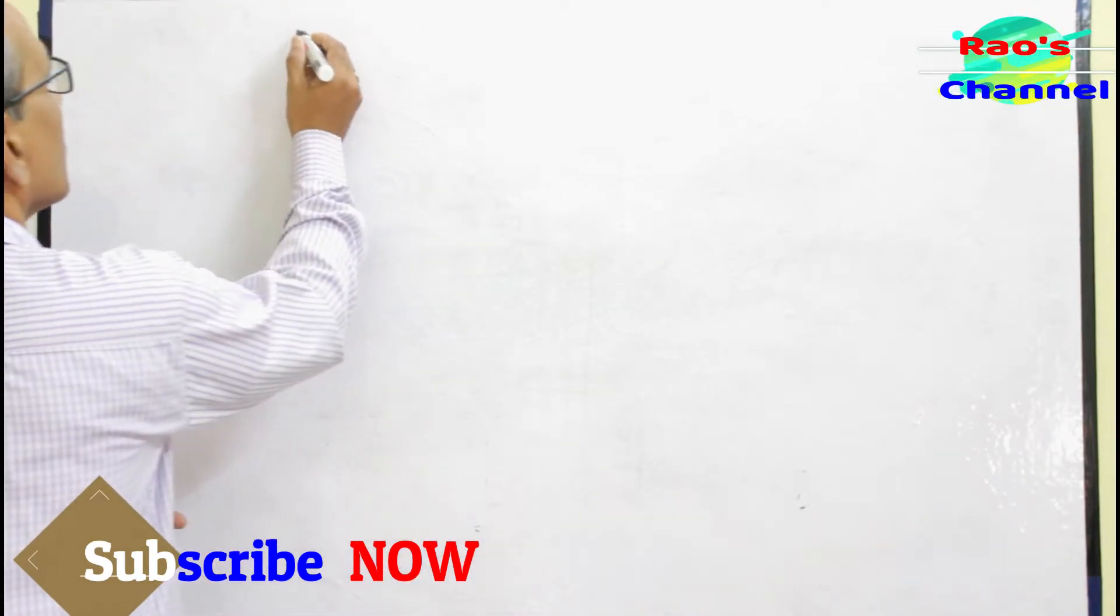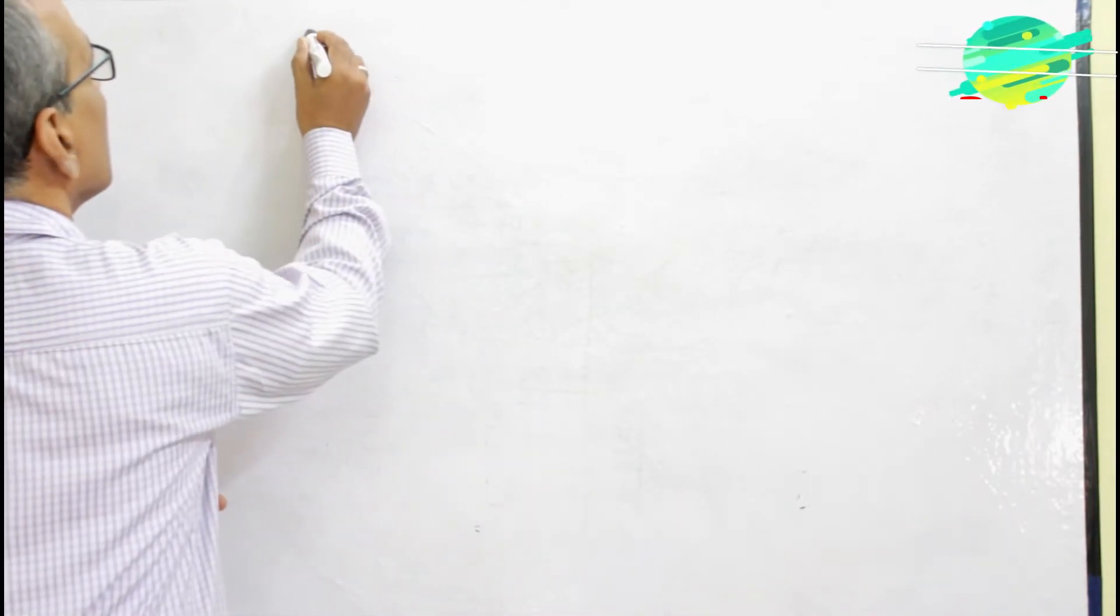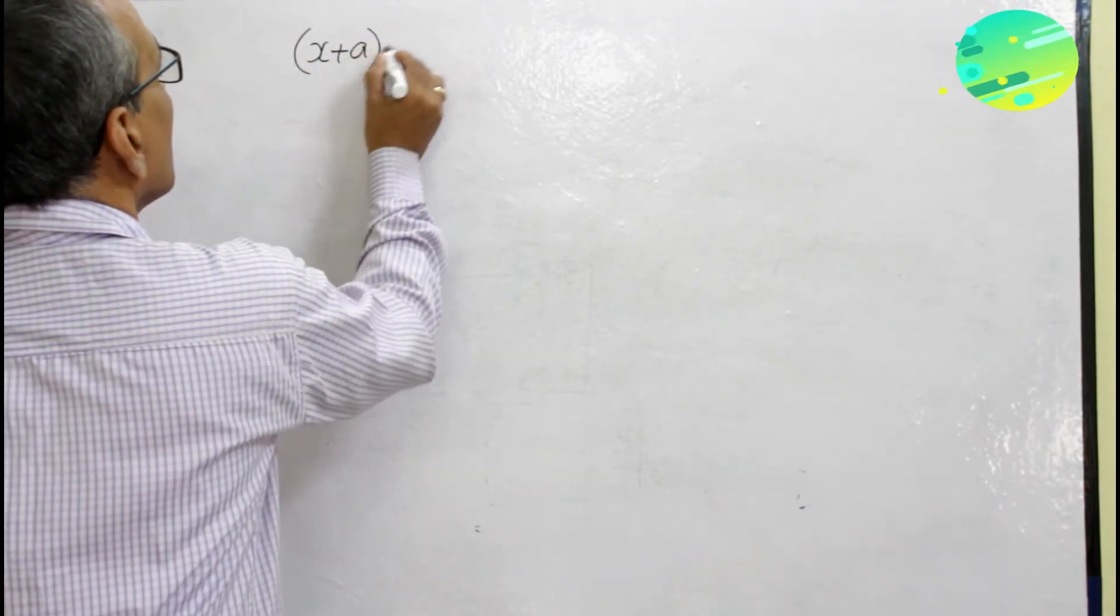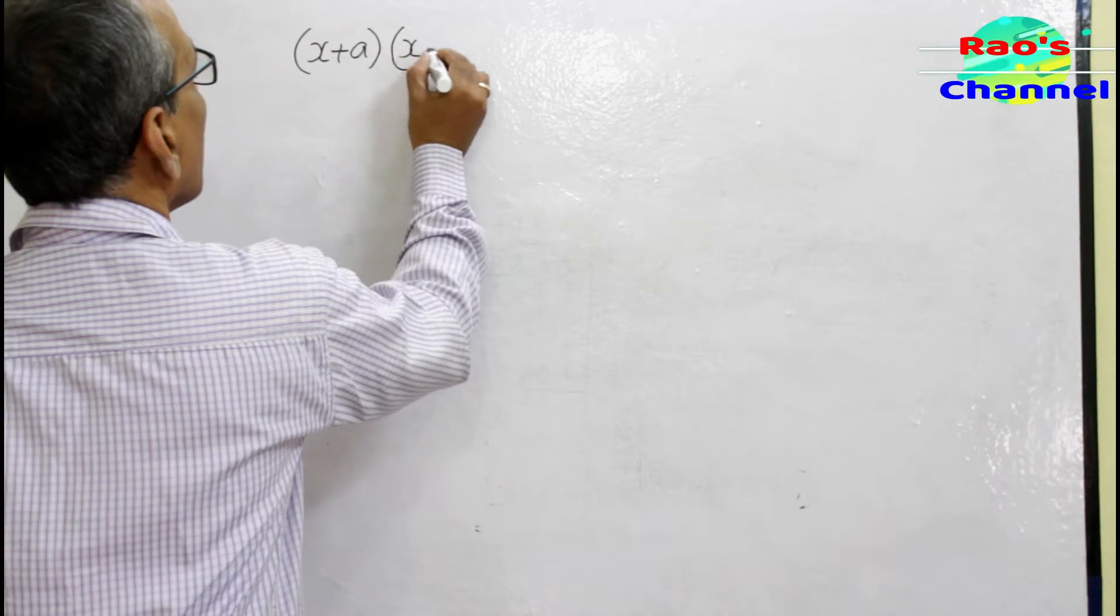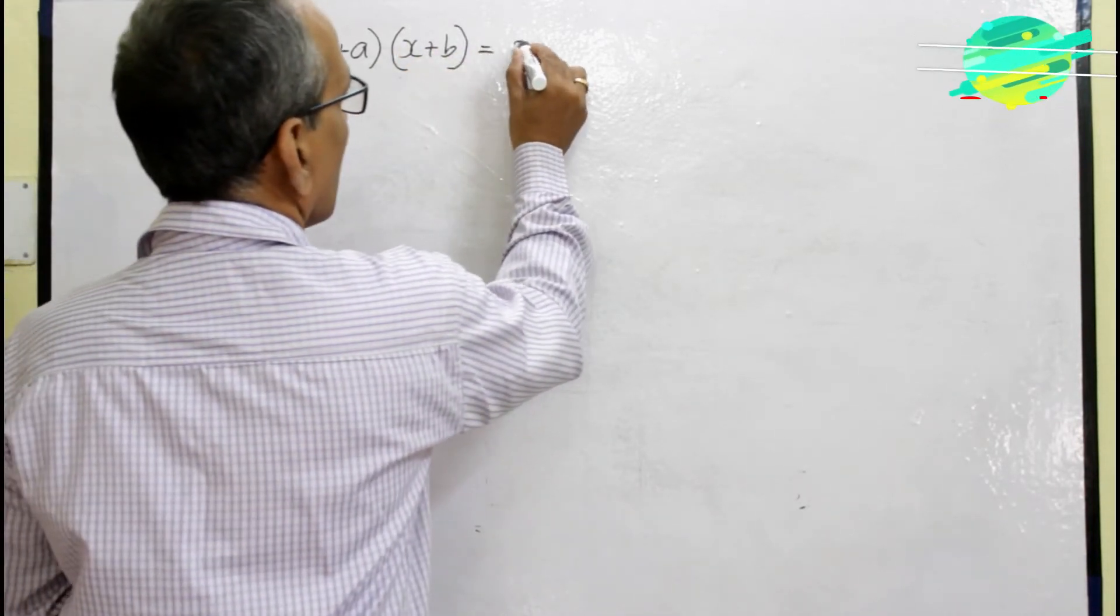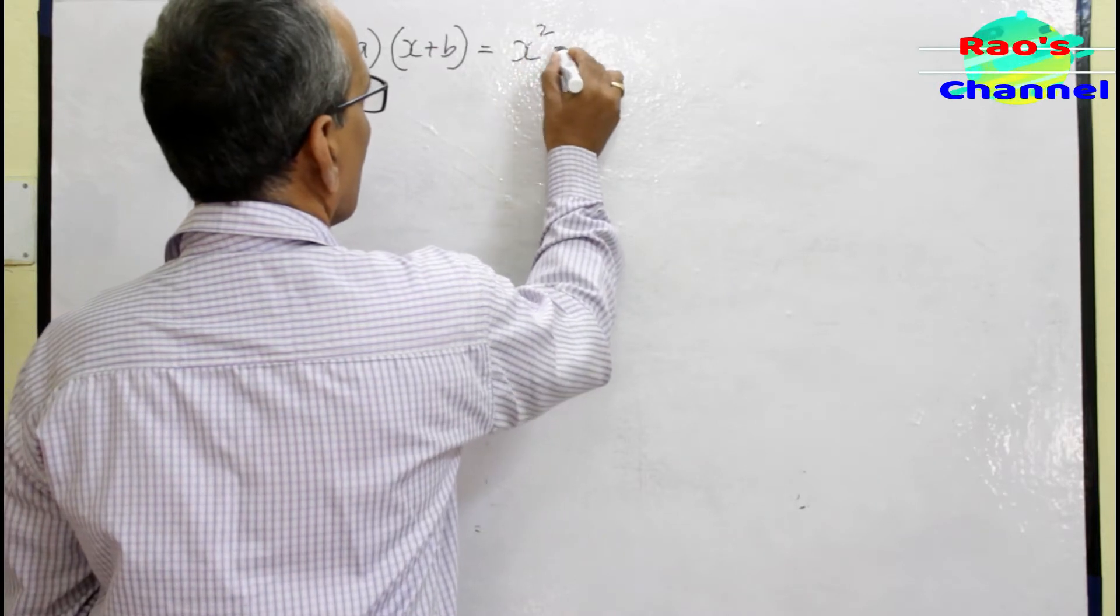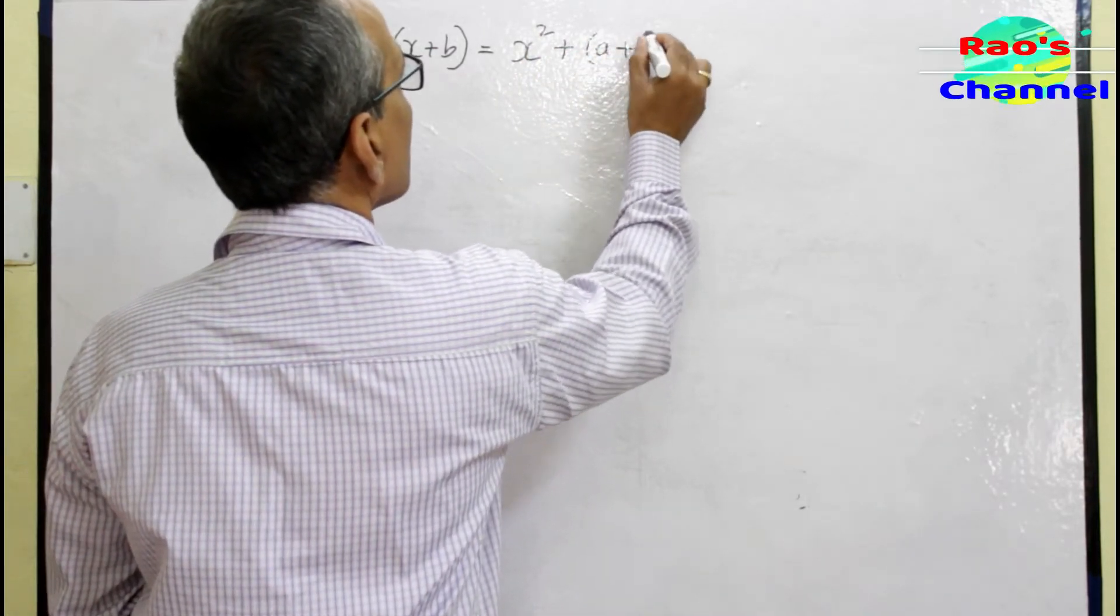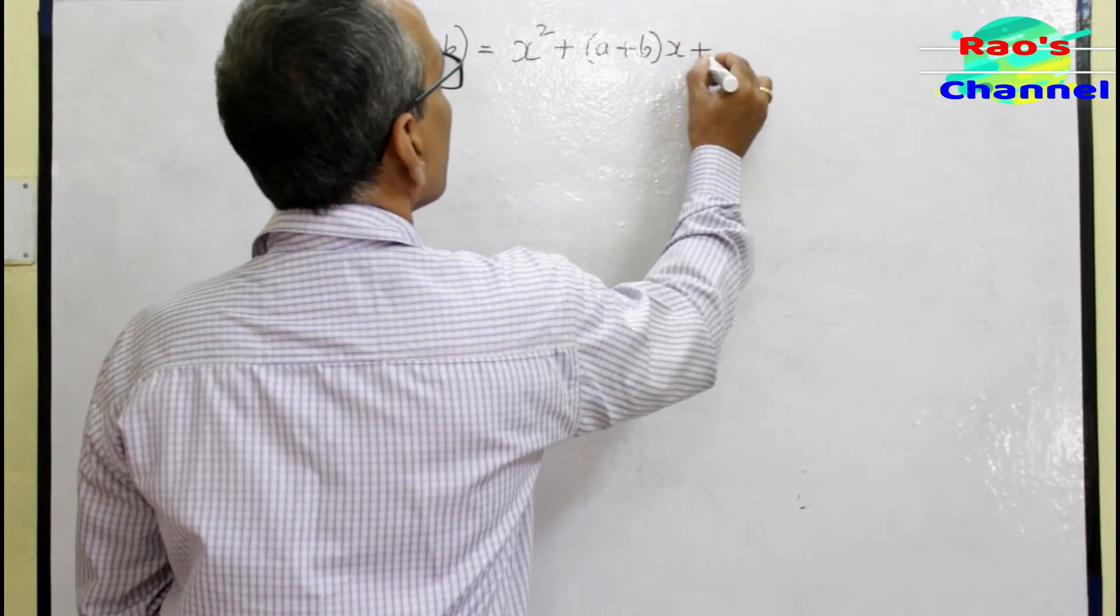First, let's see the identity. What we are going to learn today is: (x+a)(x+b) = x² + (a+b)x + ab.